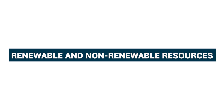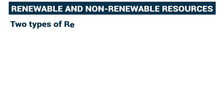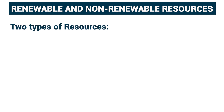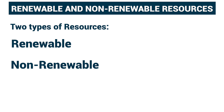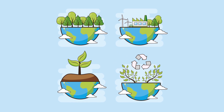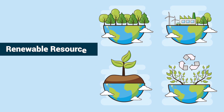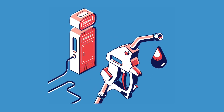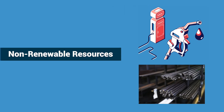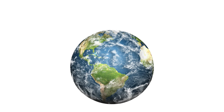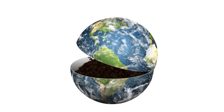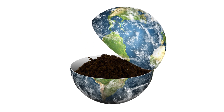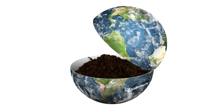There are two types of resources: Renewable and Non-renewable. The resources which can be regenerated are called renewable resources. Example: wood. The resources which cannot be regenerated are called non-renewable resources. There is only a limited amount of minerals available on earth, and we should use them with care.